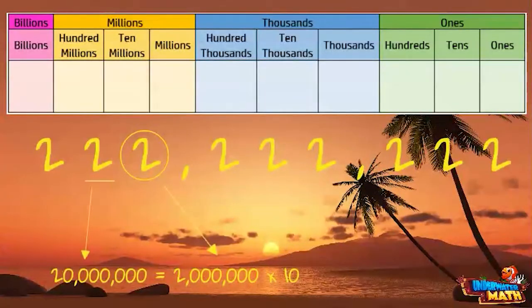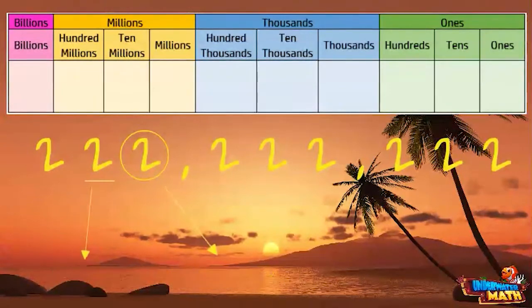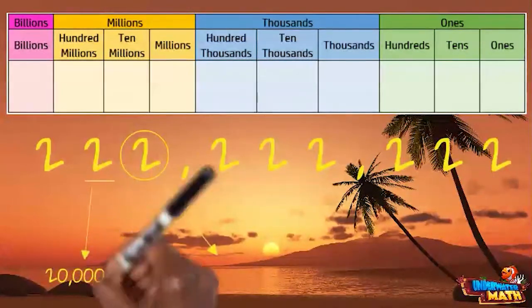The value of the underlined digit is 10 times the value of the circled digit, because we could take 10 of those circled digits to make one of that underlined digit. And the value of the circled digit is one tenth the value of the underlined digit.